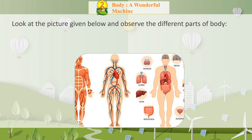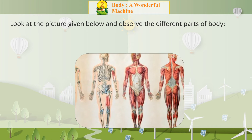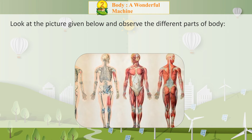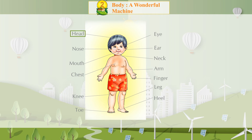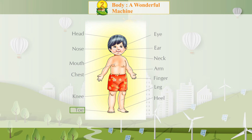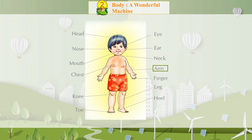Look at the picture given below and observe the different parts of the body: head, nose, mouth, chest, knee, toe, eye, ear, neck, arm, finger, leg, heel.